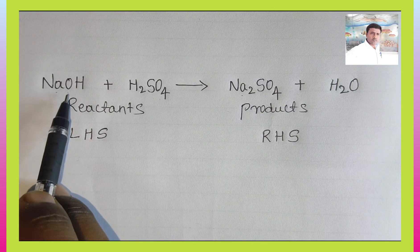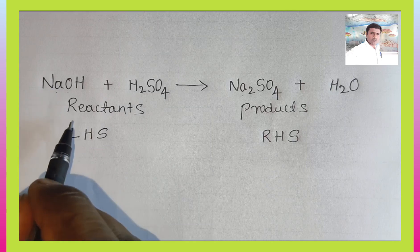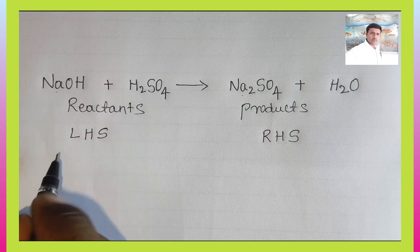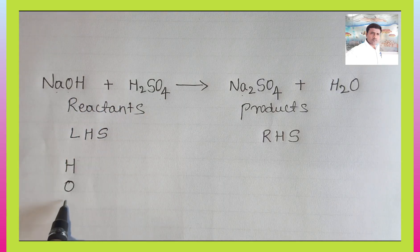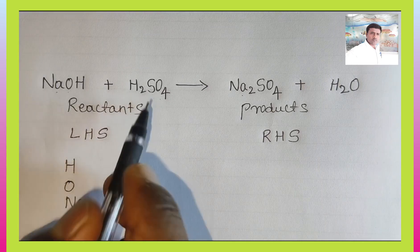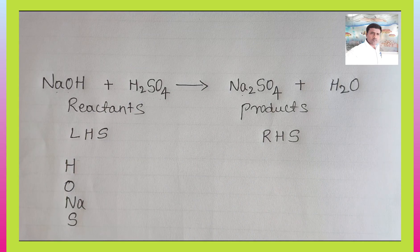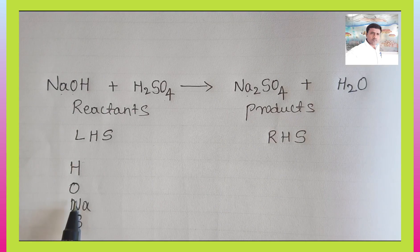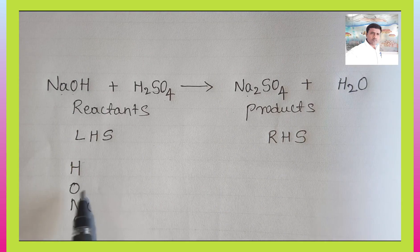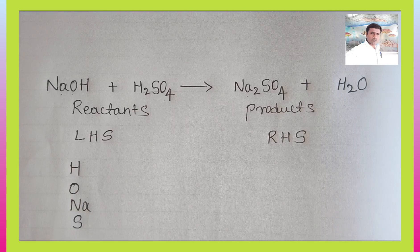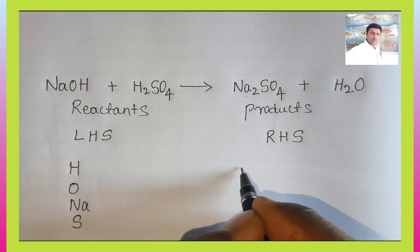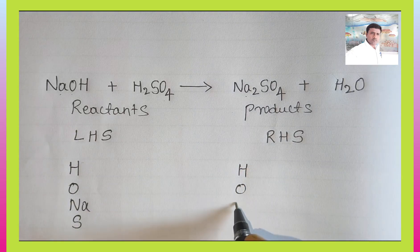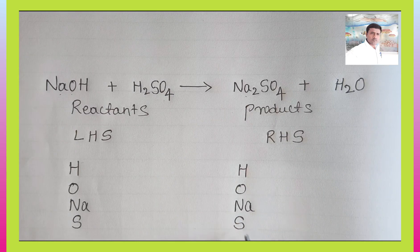Now we consider the elements present. On the reactant side we have: hydrogen, oxygen, sodium, and sulfur. When reactants react to give a product, the same elements we write on the LHS side we can also write on the RHS side: hydrogen, oxygen, sodium, and sulfur.